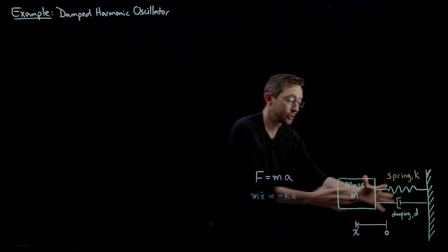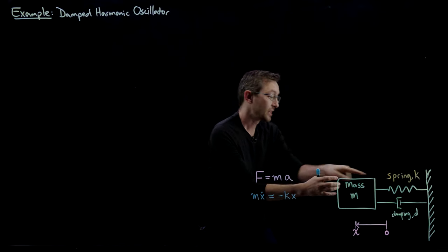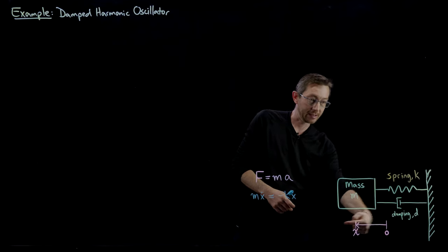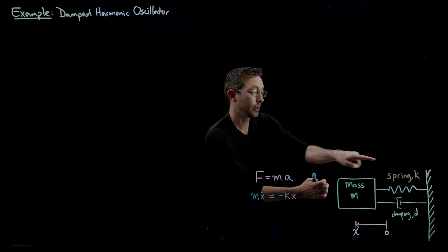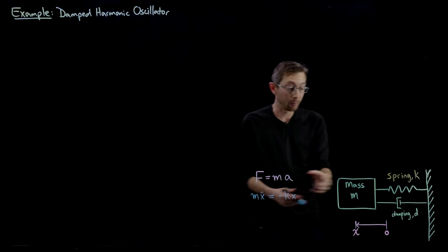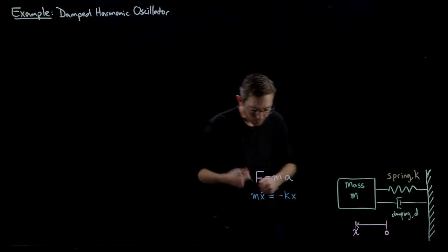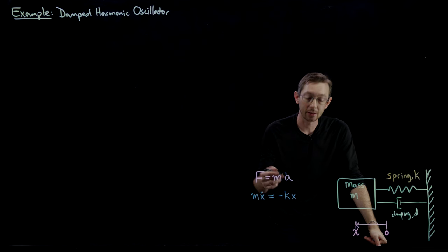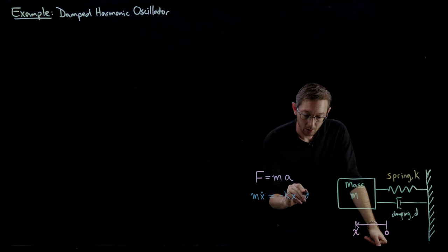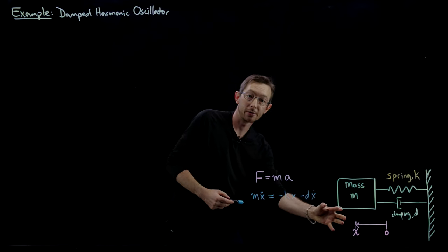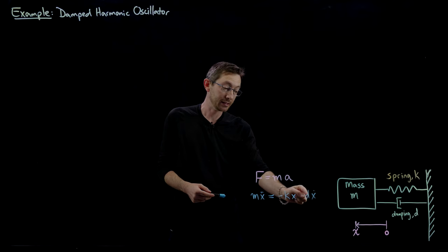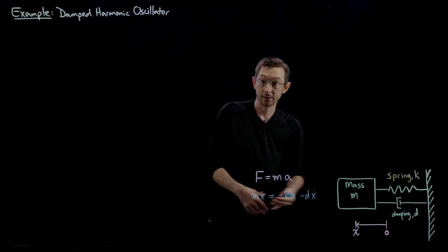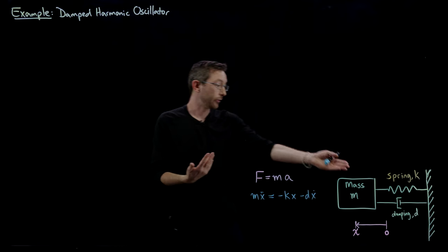If I pull x to a positive position, the spring gives a negative restoring force proportional to displacement — that's minus kx. The damping term works similarly: if I have a positive velocity, the damper decelerates me with a force of minus d times x dot. The faster I'm going, the more the damper decelerates the motion. So we simply wrote down F=ma for this problem.